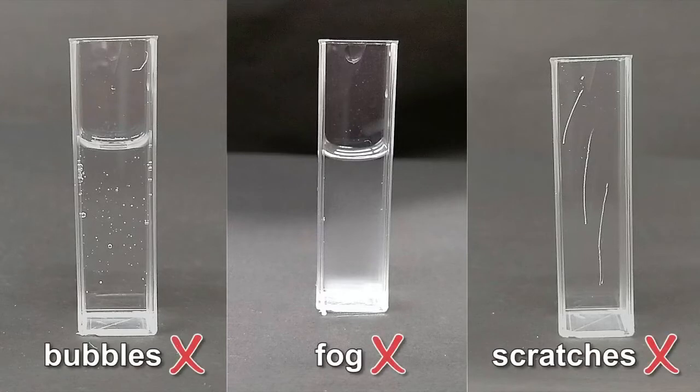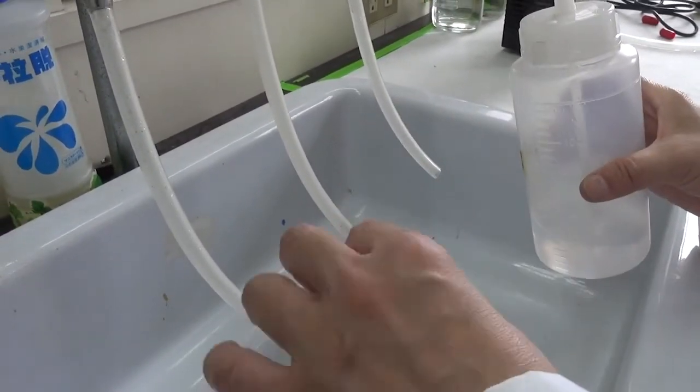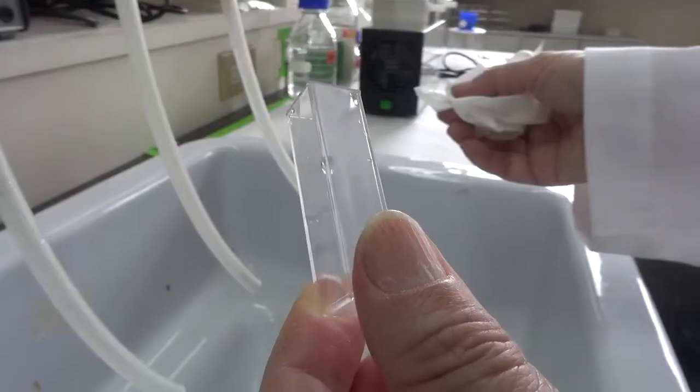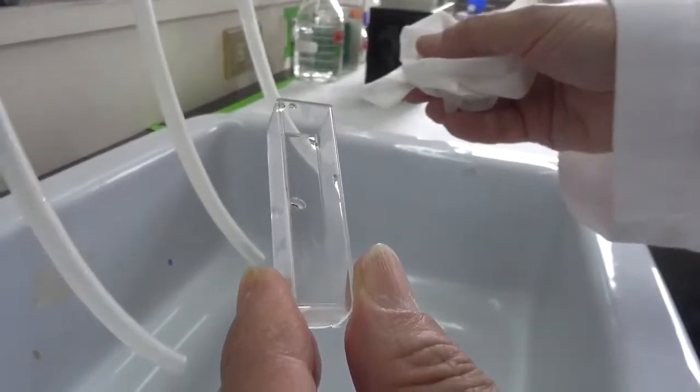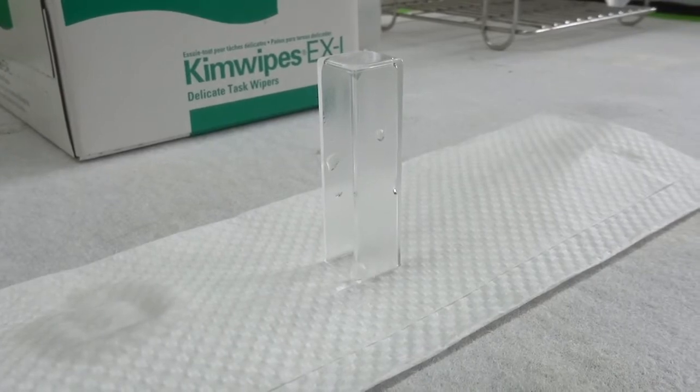The cuvette or microplate must be free of bubbles, fog, or scratches during measurement. Before and after use, please be sure to clean the cuvette thoroughly. Rinse the inside with distilled water a few times and wipe the clear light passing sides carefully with a Kimwipes. Leave the cuvette upside down on a paper towel to dry before next use.